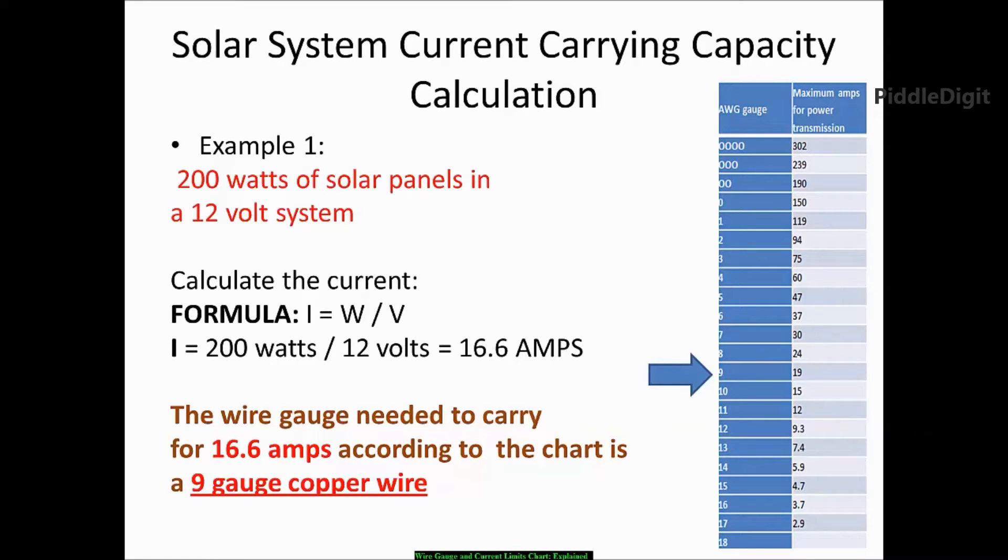Now if you look at the wire gauge and current limit chart, 16 is not on this chart. There is 15 and of course there is 19. The value on this side is the current. So after I've calculated the current here, I reference the chart to see what gauge wire falls in the range of the calculated current. Because 16.6 is not on this chart, I see 15 and I see 19, so I'm going to round up.